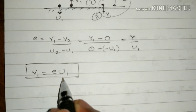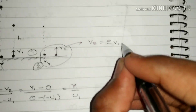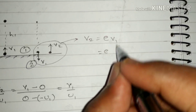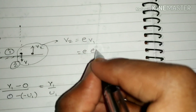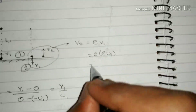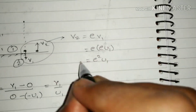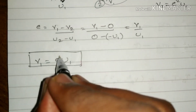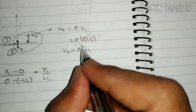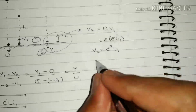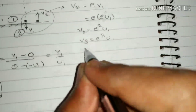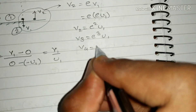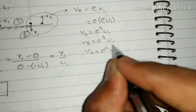We have already proved that v1 = e × u1. So instead of v1, I write e × u1, which gives v2 = e² × u1. You might have noticed: at the first bounce we had e to the power 1, at the second bounce we have e to the power 2. Similarly, for the third bounce v3 = e³ × u1, for the fourth bounce v4 = e⁴ × u1, and so on.